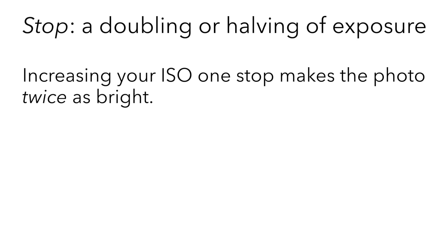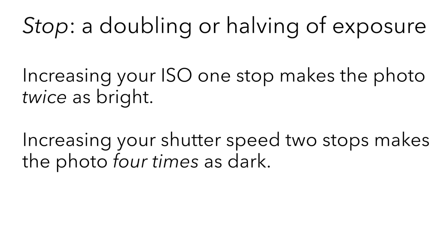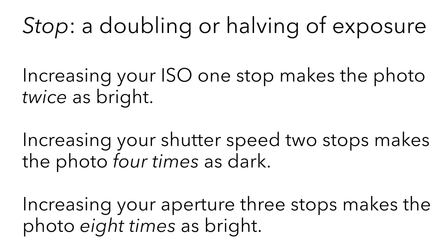Increasing your ISO one stop will make your photo twice as bright. If you increase your shutter speed by two stops, your photo will be four times as dark — one half as bright for the first stop change and one half of that for the second stop. Increasing your aperture by three stops will make your photo eight times as bright: double it for the first stop, double that for the second stop, and then double it again for the third stop.